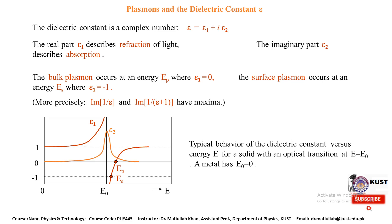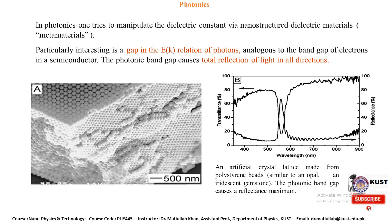Surface plasmons occur at the energy where ε₁ = −1. The typical behavior of the dielectric constant versus energy is shown for a solid with an optical transition at E = E₀. This describes the dielectric constant of the surface plasmon and how it can be used in photonics.